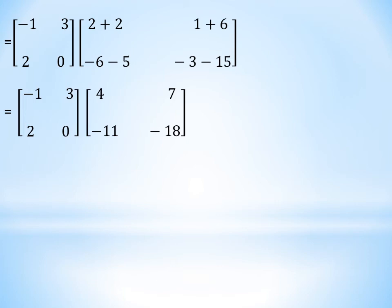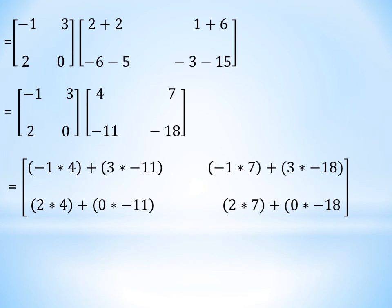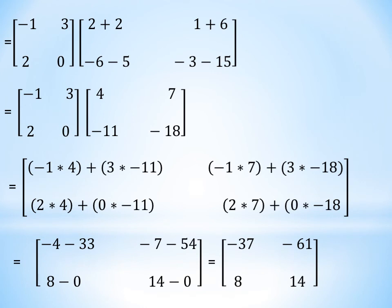Now matrix A is multiplied with BC. First row of A times first column of BC: -1×4 + 3×(-11). First row of A times second column of BC: -1×7 + 3×(-18). Second row of A times first column of BC: 2×4 + 0×(-11). Solving all terms gives -4-33, -7-54, 8-0, and 14-0, resulting in the matrix with elements -37, -61, 8, and 14. This is the left-hand side result.